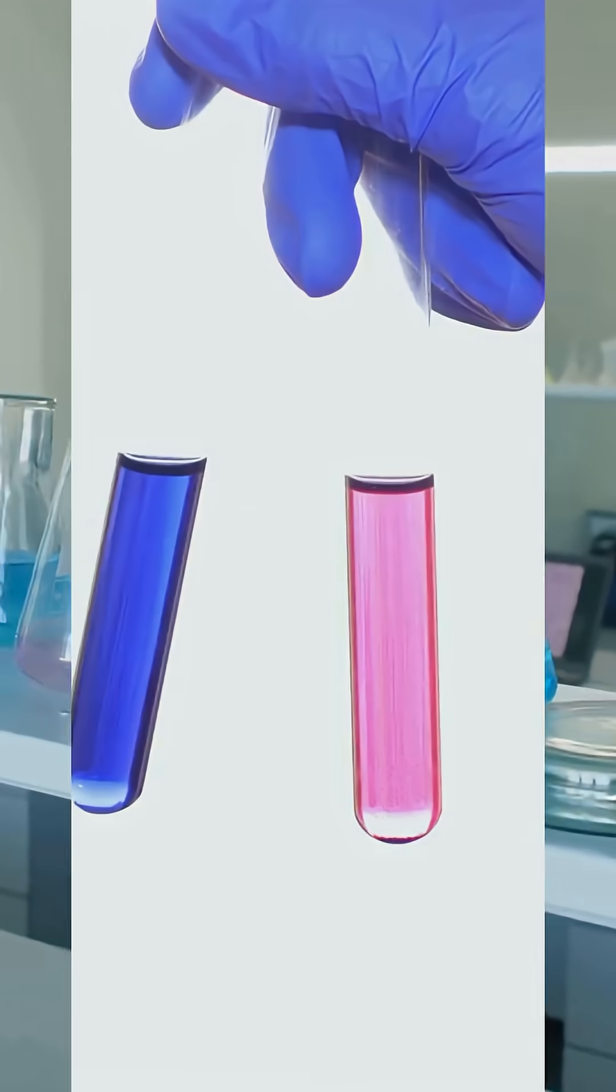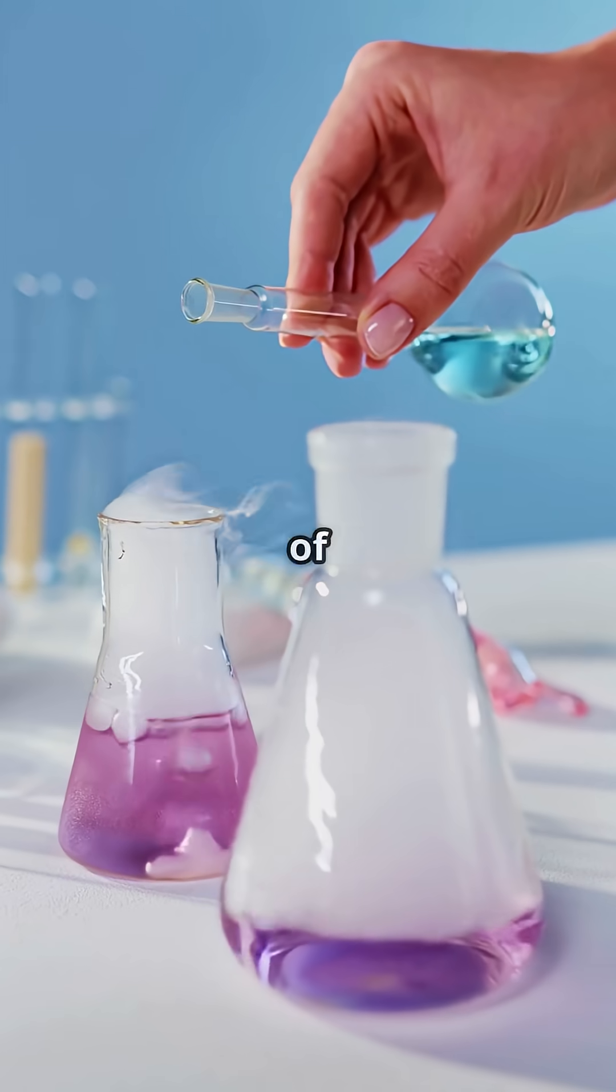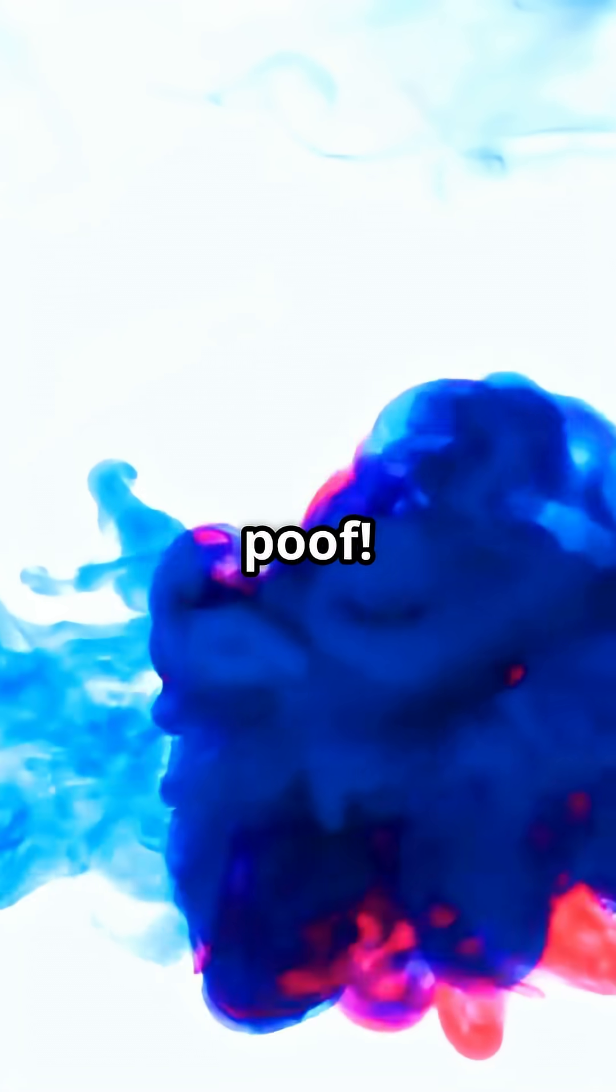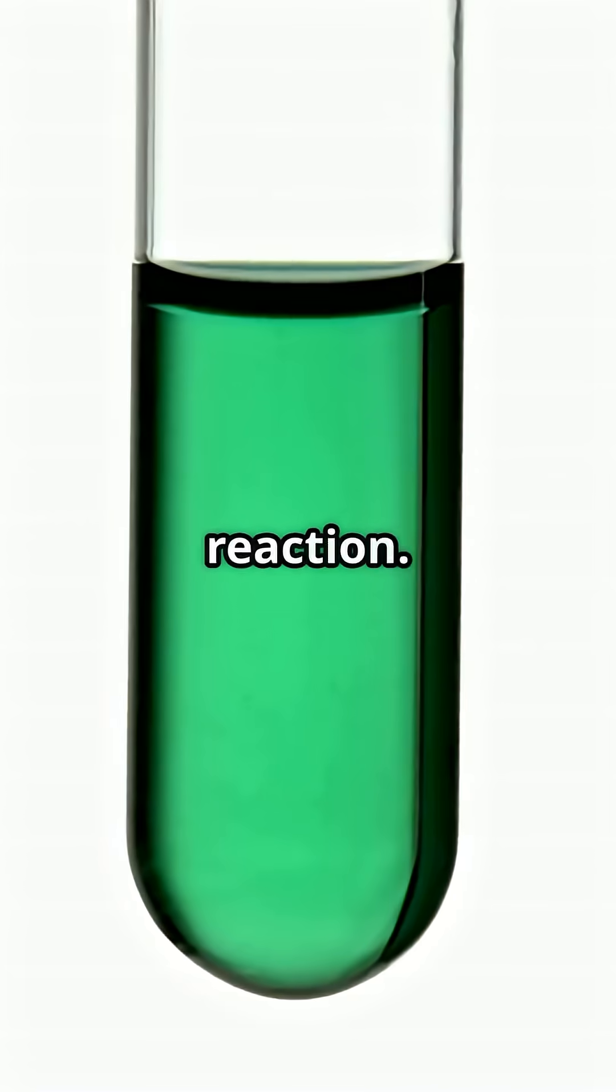Imagine litmus paper as the mood ring of the science lab. Got some blue litmus, add a drop of something acidic like lemon juice and poof! It turns red faster than you can say chemical reaction.